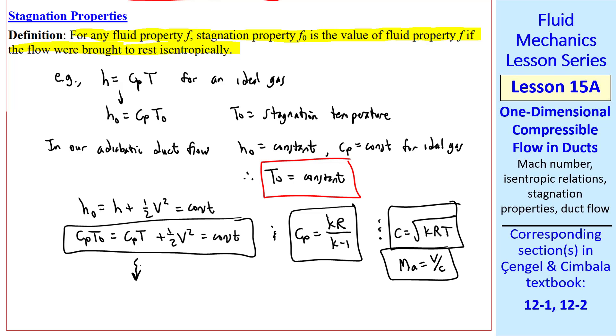We expand H0, then express H in terms of CpT, and get this expression. We also have this relationship between Cp, K, and R, the speed of sound, and the definition of Mach number. Combining these four equations after a bit of algebra, we get T0/T equals 1 plus (k-1)/2 Ma squared. This turns out to be a very useful equation for flow in ducts. Note that this holds for an ideal gas and can be applied at any location in the flow.